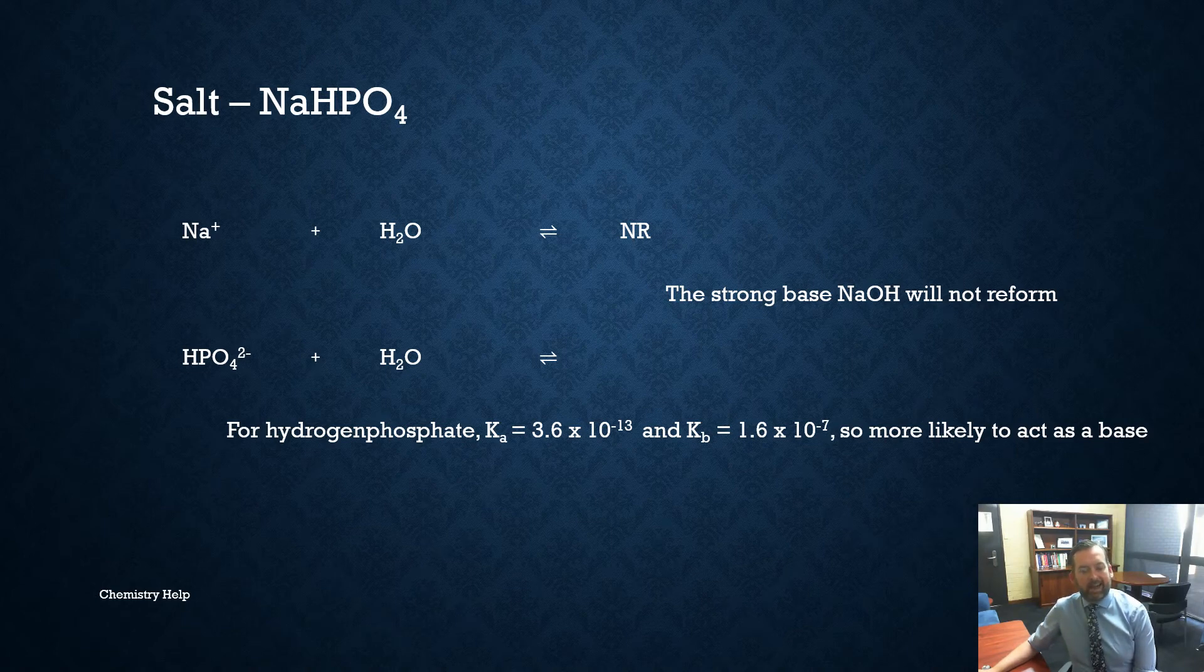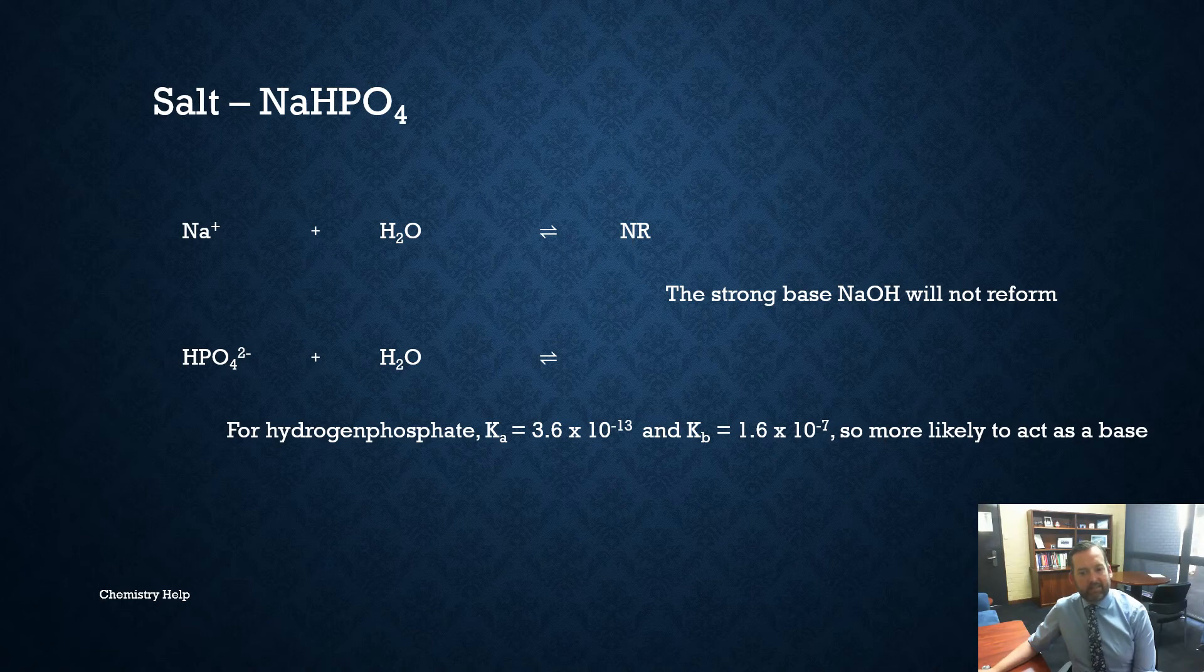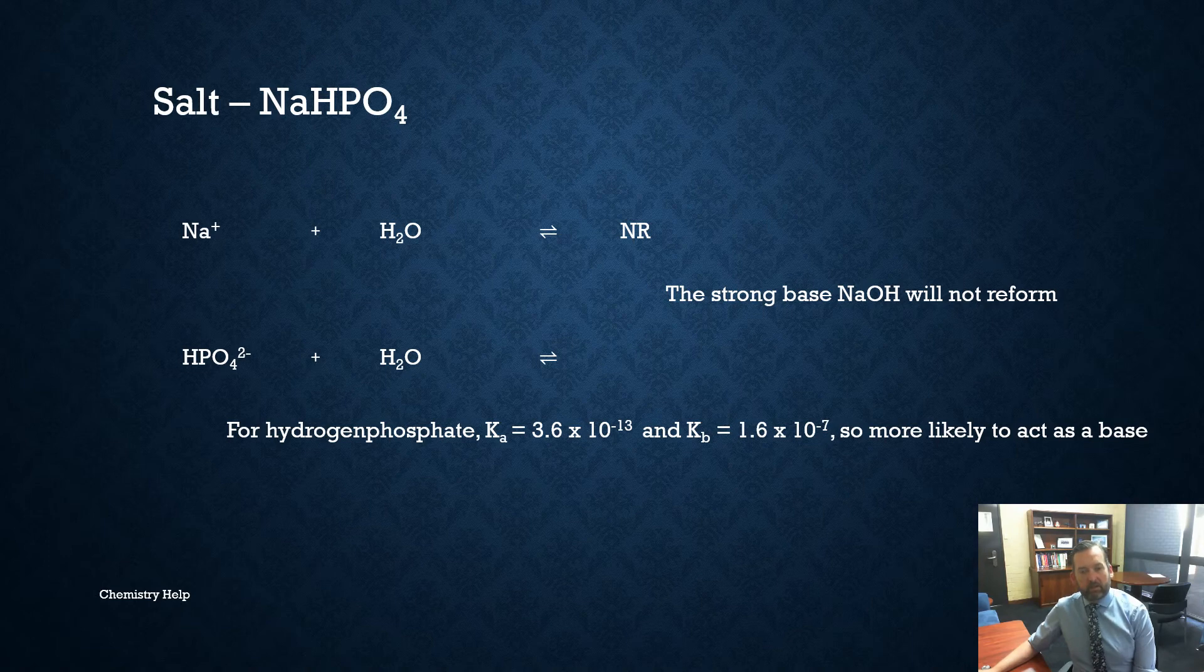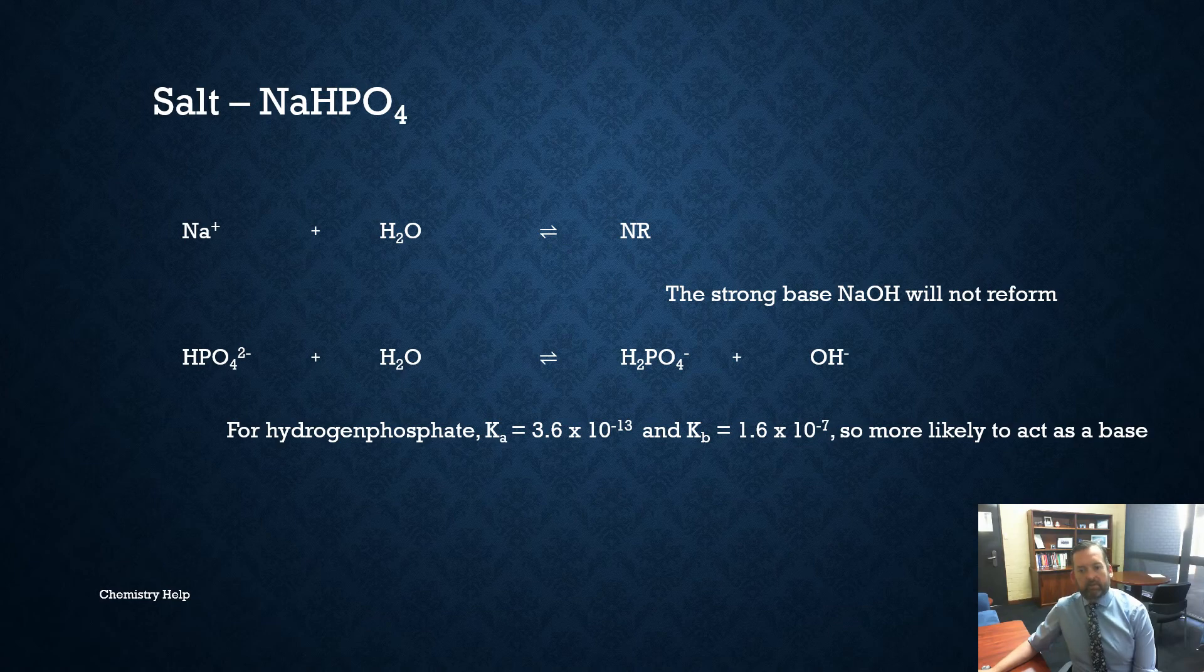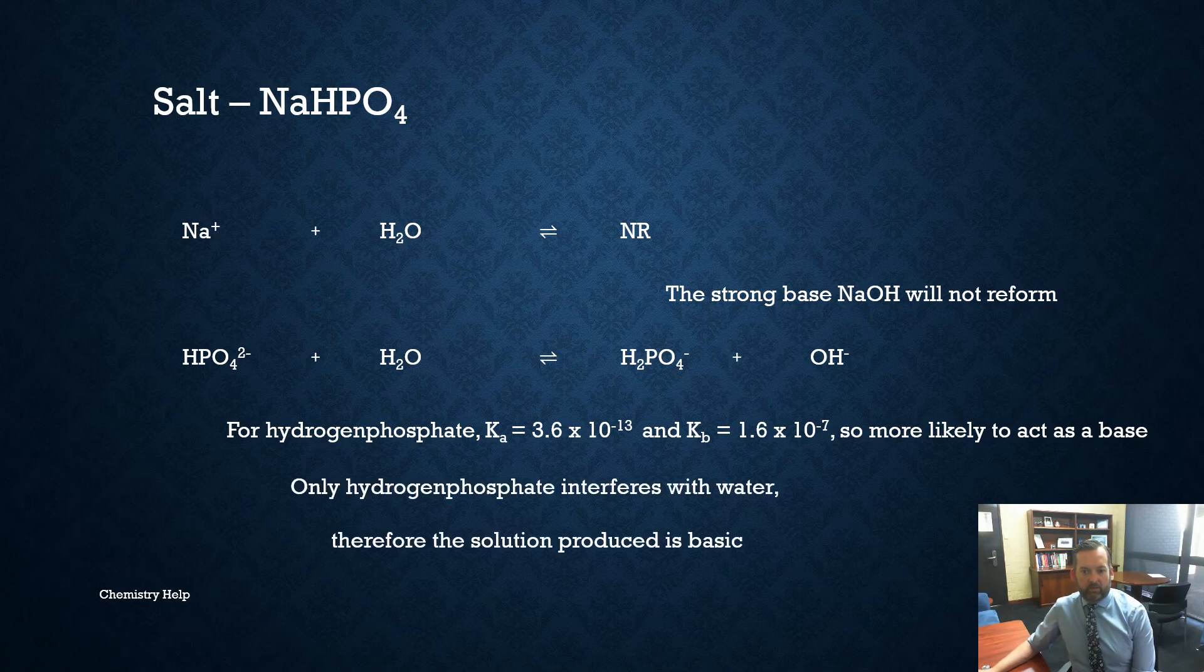So what we need to do here is we actually need to look at the Ka and the Kb. So you see the Ka, so if it was to act as an acid, is 3.6 times 10 to the minus 13. If it was to act as a base it's 1.6 times 10 to the minus 7. So the base number is bigger. So that's the one it's most likely to do. So it's most likely to act as a base not as an acid. Therefore it's going to act as a base and it's going to accept the proton and it's going to form the dihydrogen phosphate ion and therefore it's going to be basic as a solution.